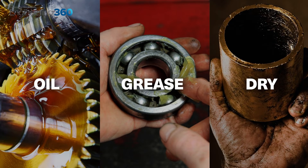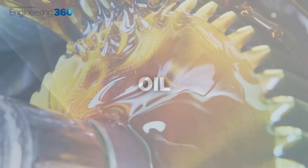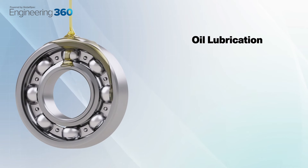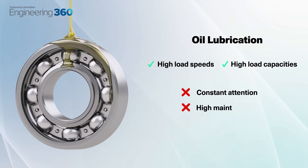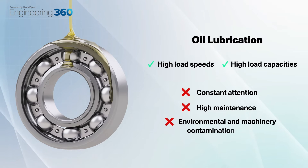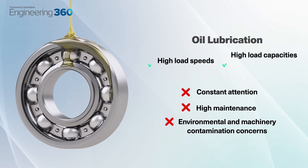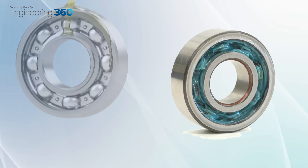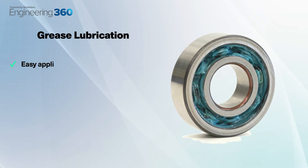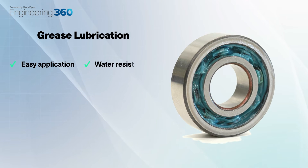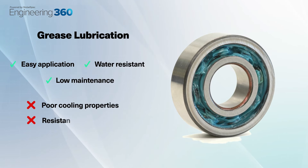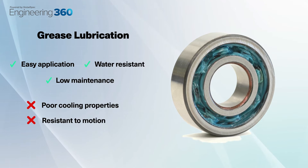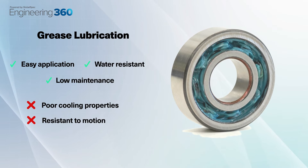If you opt for bearings that aren't pre-lubricated, then there are a few options to consider, again depending on the application you need it for. While oil has extremely advantageous lubricating properties, the many different systems all require constant attention, maintenance and still raise some possible environmental and machinery contamination concerns. Grease is a great option for many bearing systems due to its easy application, water resistance and low maintenance, but poor cooling properties and a resistance to motion can make it a poor choice for low-torque, high-speed rotating machinery.